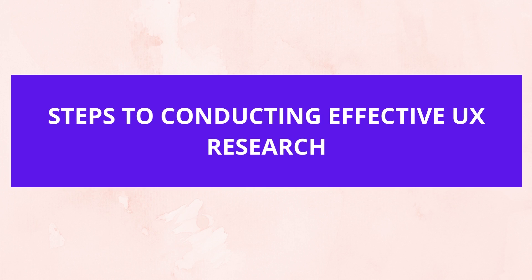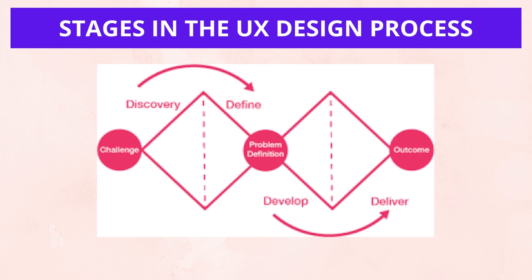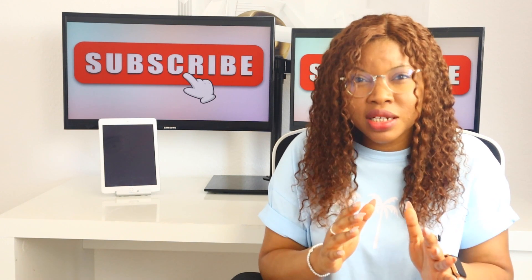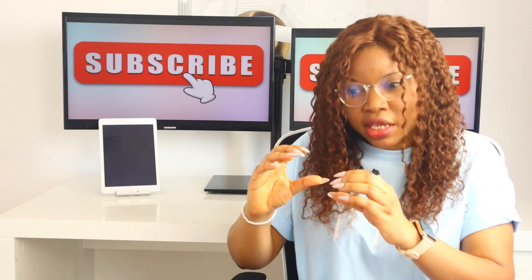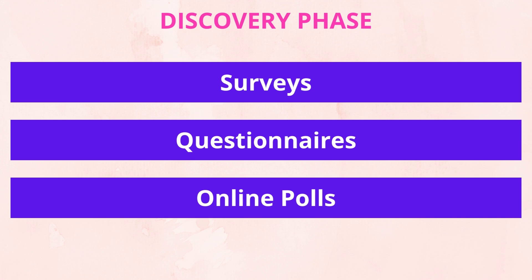So what are the steps to conducting effective UX research? First, you need to understand the stage in the UX design process you are in. Basically, there's the discovery phase, the definition phase, the development phase, and the delivery phase. UX research methods differ for each stage, so you should choose a research method that fits the UX design stage you are in.